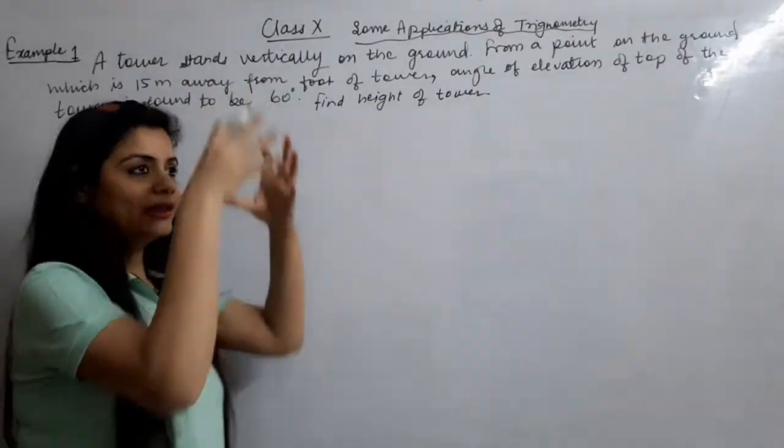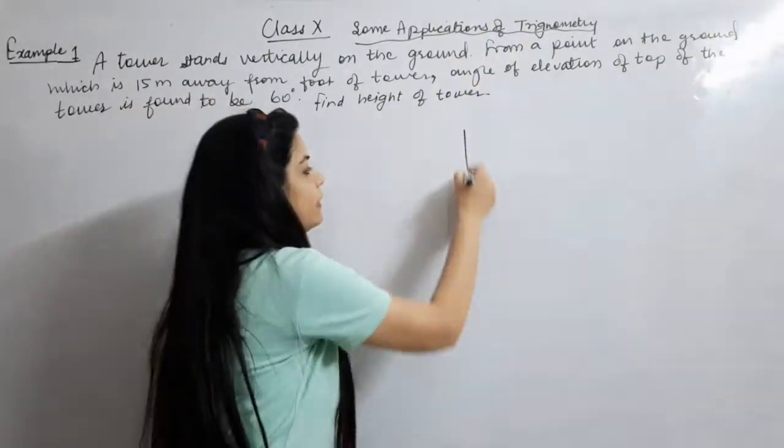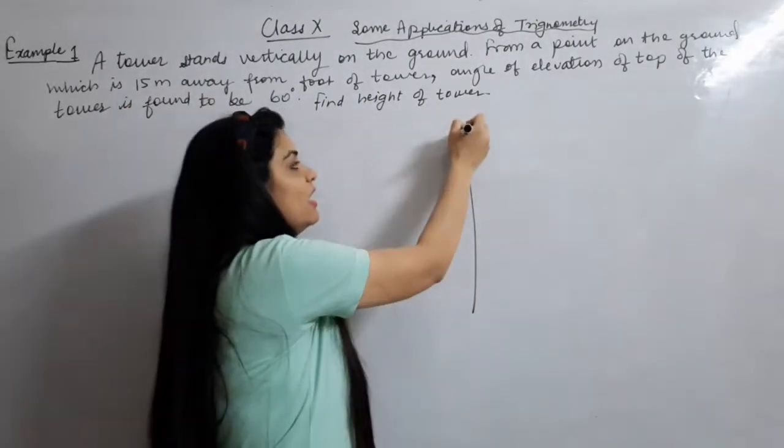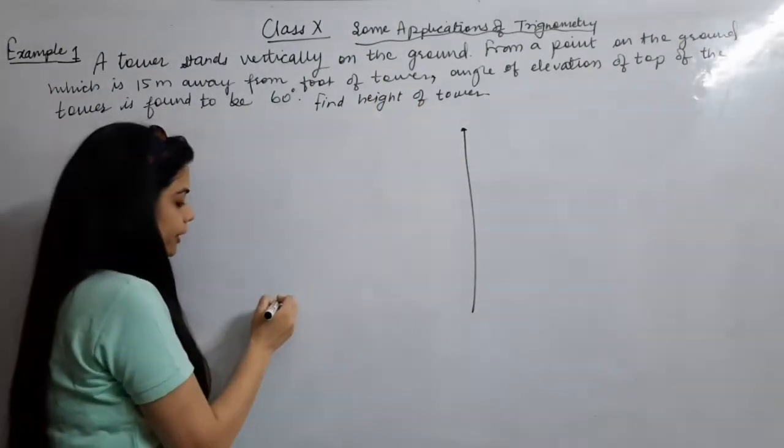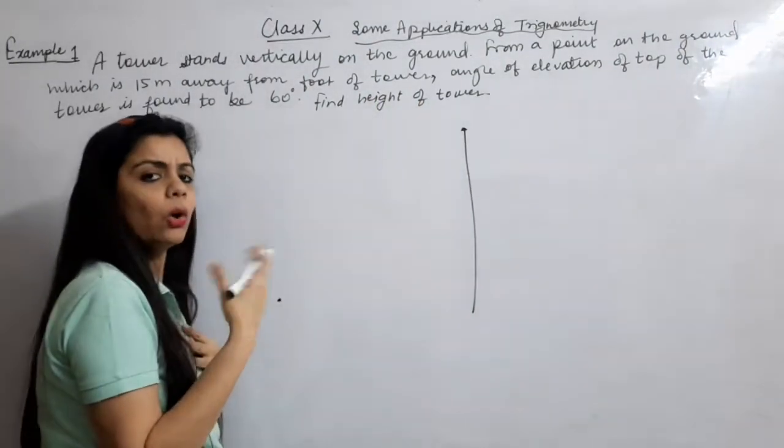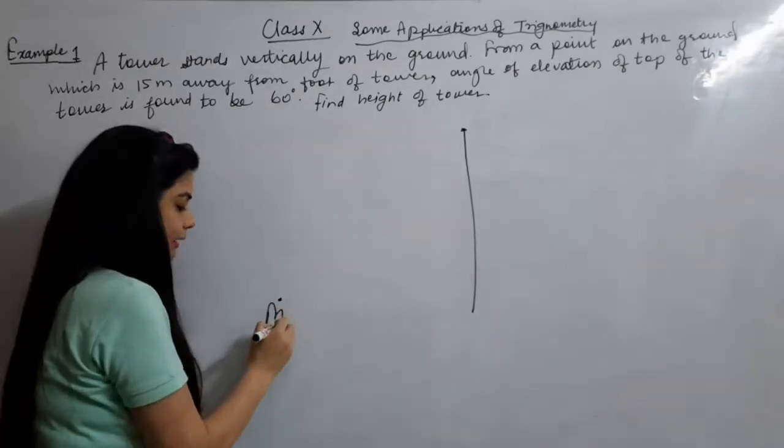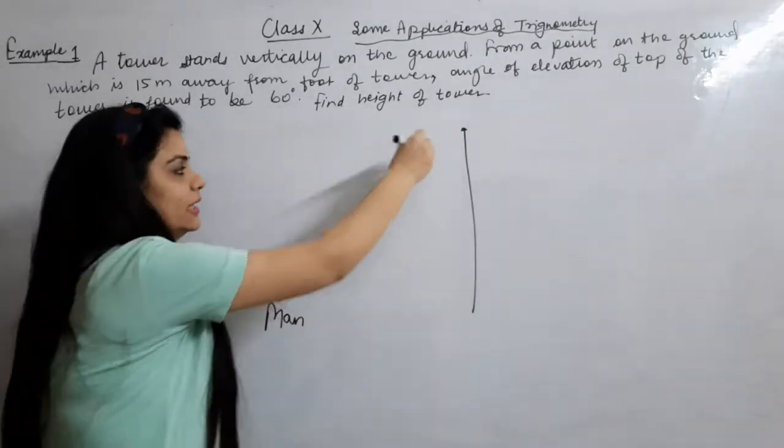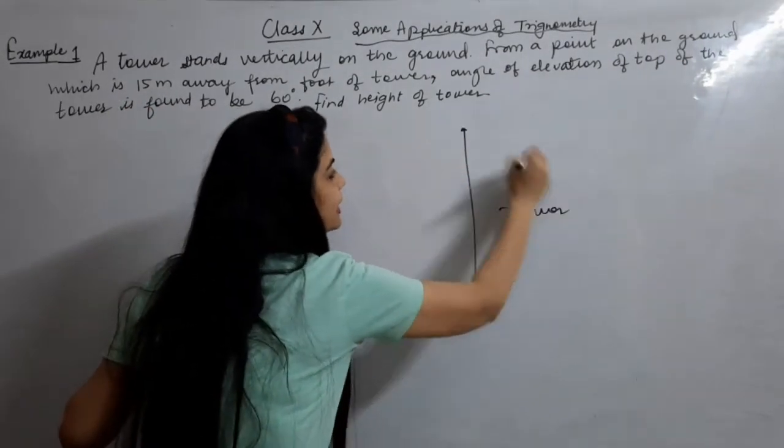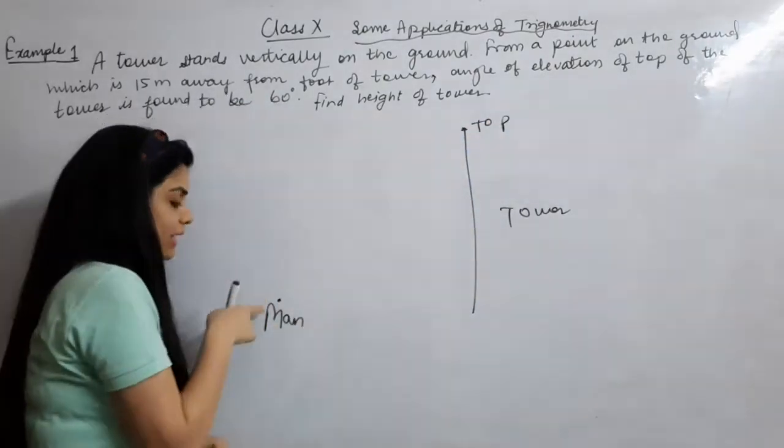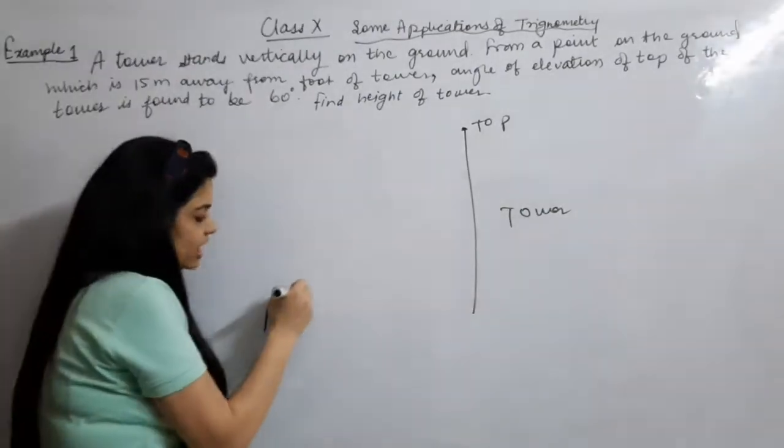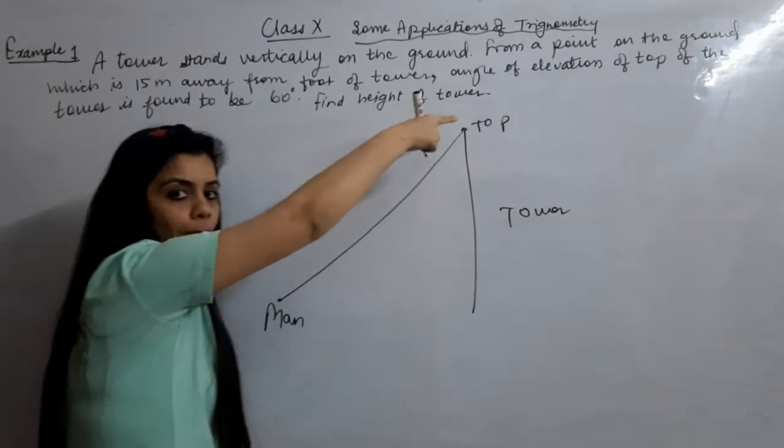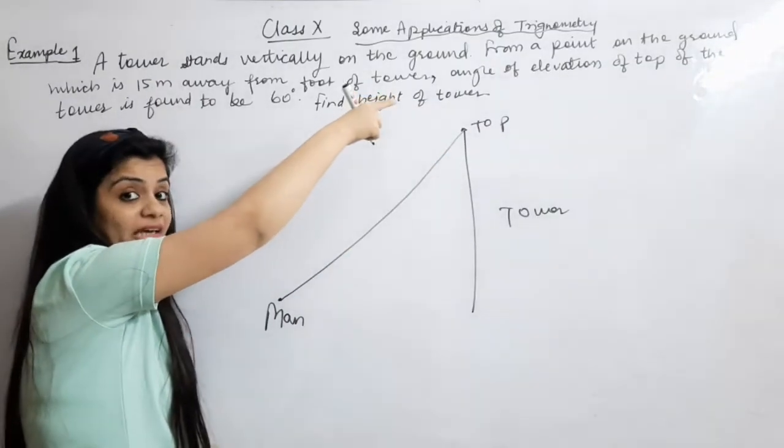What happens? Like there is a tower. This is a tower. This is the top point of the tower. Where am I standing? I am standing here. This is me or any person. This is a man. This is a tower. This is the top point of the tower. I am standing here. I am looking at the top of the tower.